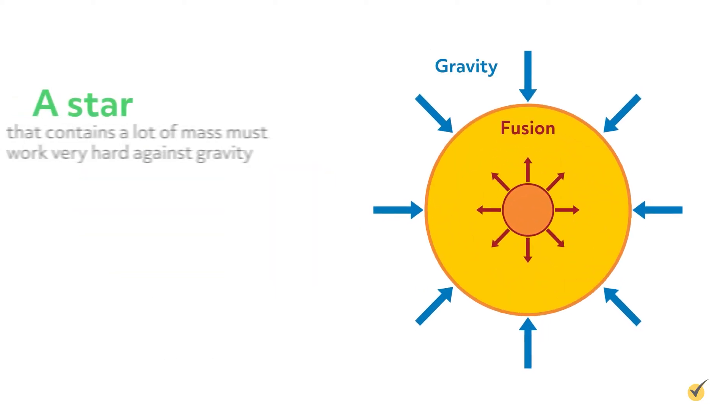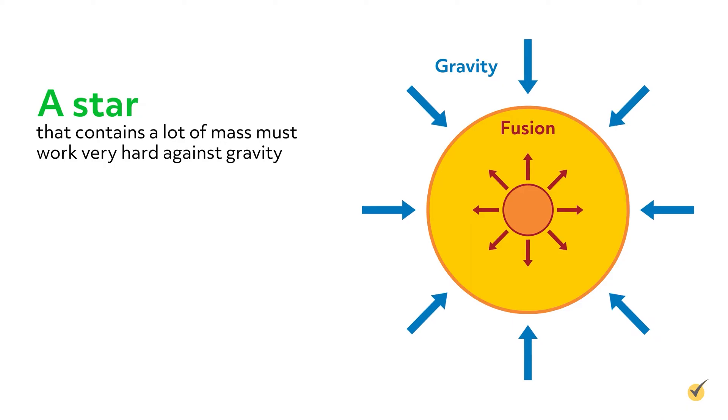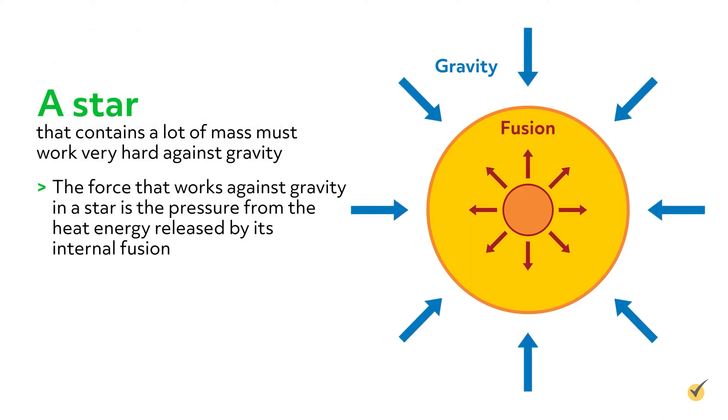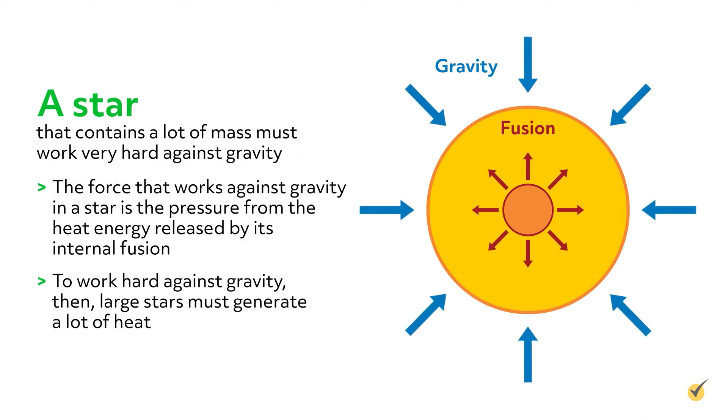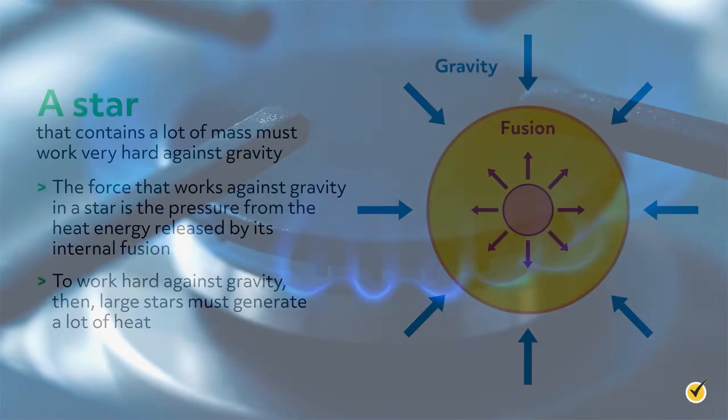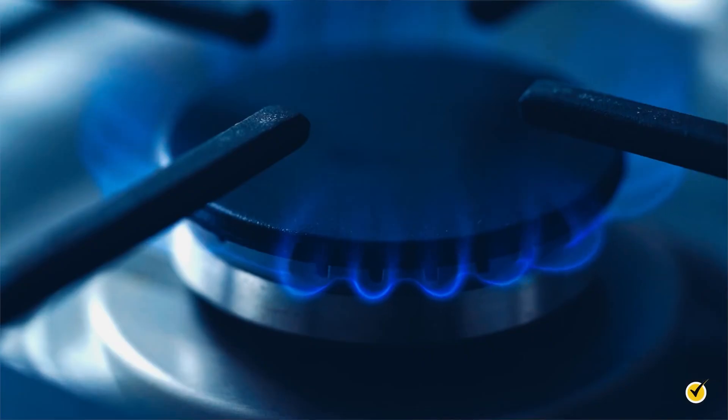A star that contains a lot of mass must work very hard against gravity. The force that works against gravity in a star is the pressure from the heat energy released by its internal fusion. To work hard against gravity, then, large stars must generate a lot of heat. This makes the star white-hot, or bluish-white.